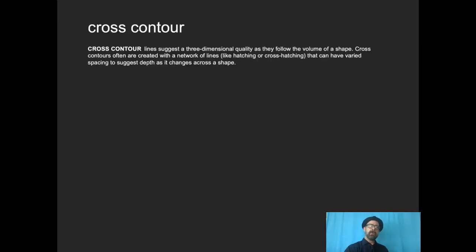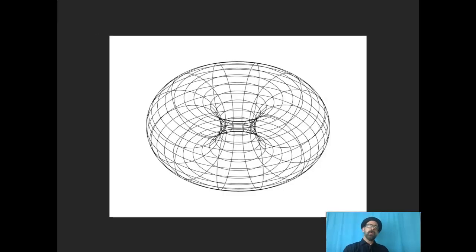Now, cross contour is a little different. It will run across a shape to suggest volume, three-dimensional quality. And so typically that's done with a network of lines, like hatching lines that describe the volume of a shape. Like here's a vector donut. All those lines work together to suggest a volume of space.